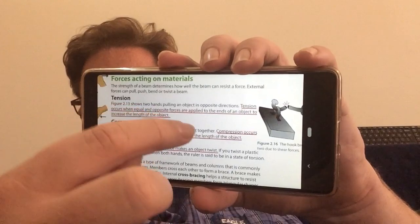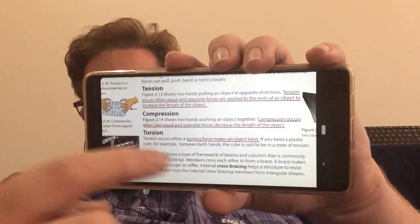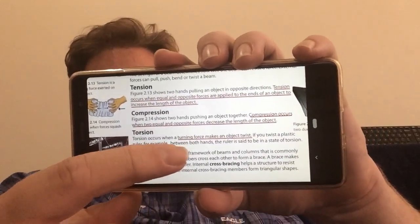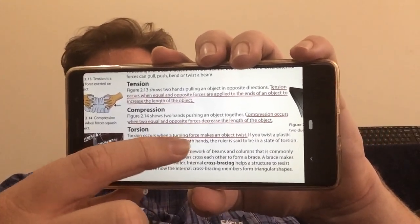And then the other force that they mention on here is torsion. Torsion is like a twisting, like if you were twisting a ruler in your hands. Forces opposing and twisting in opposite directions.